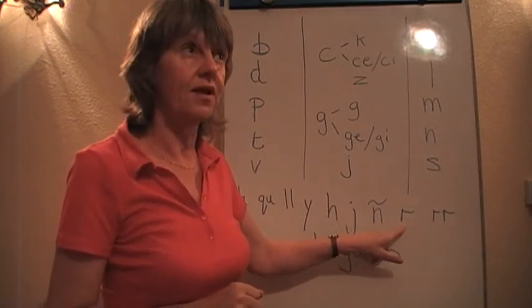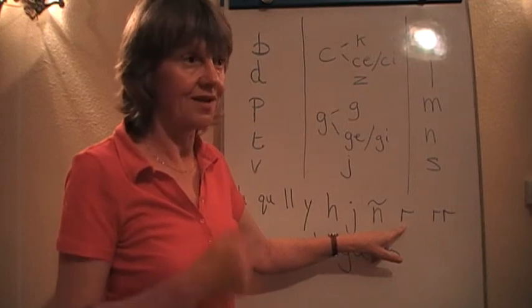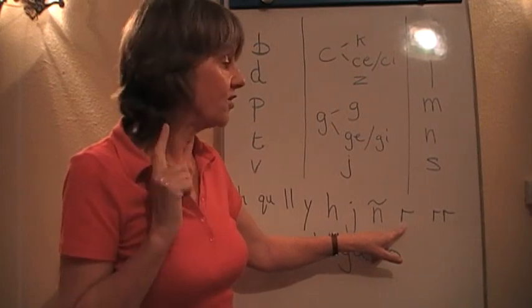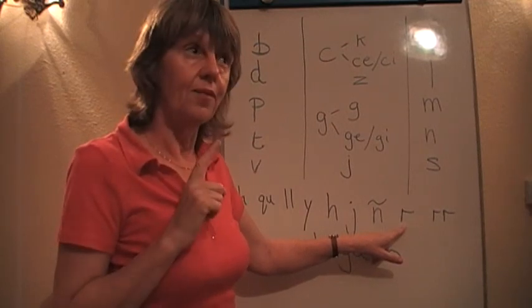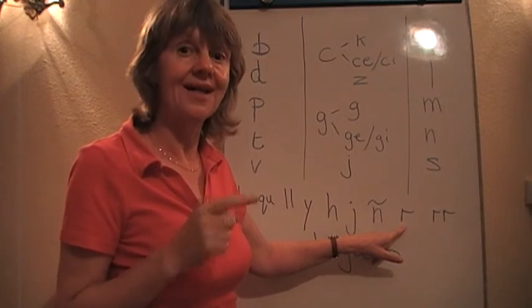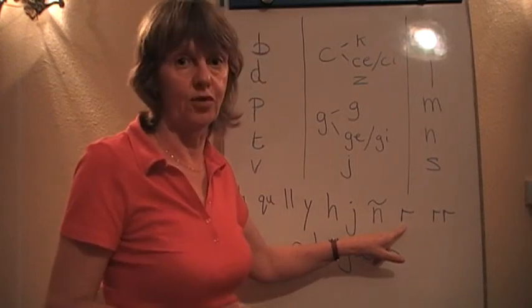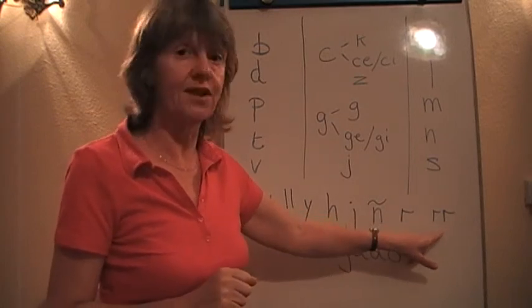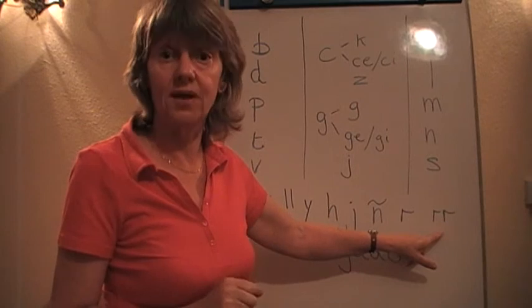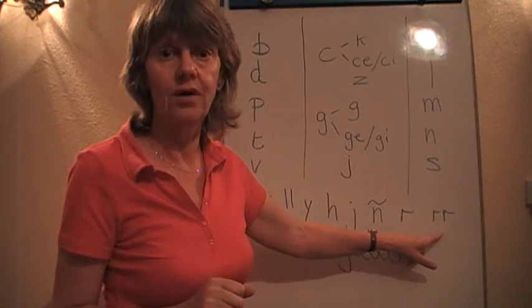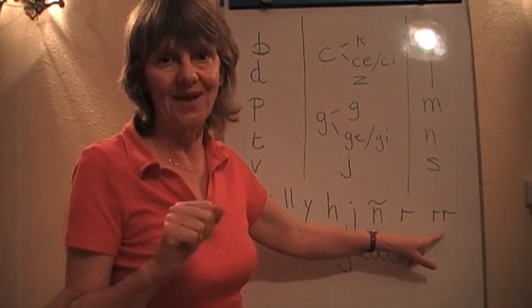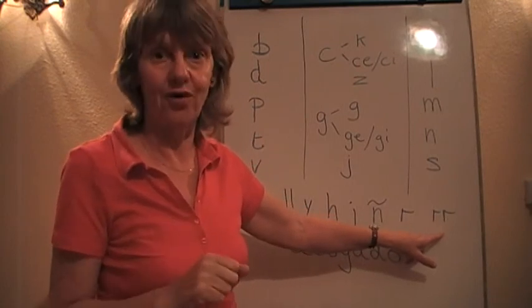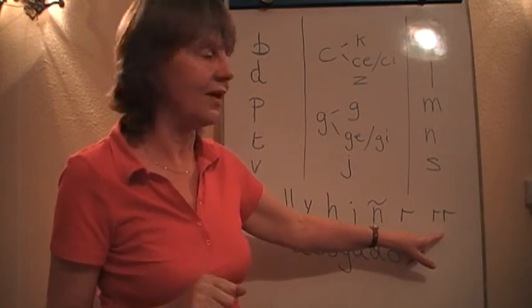Ere is the one that gives English speakers difficulty because it's a rolled R. When it's on its own, normally it's a single tap R except at the beginning of a word where it gets stronger. And then when it's doubled, it's also strong. A good example of that is the word for but, pero. The word for dog, perro. Notice the light P there as well.